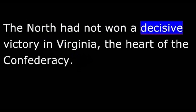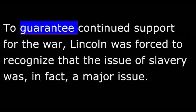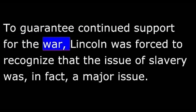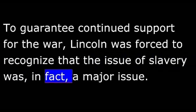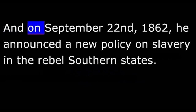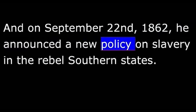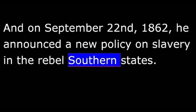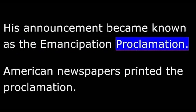Lincoln was able to follow this policy at first, but the war to save the Union was going badly. The North had not won a decisive victory in Virginia, the heart of the Confederacy. To guarantee continued support for the war, Lincoln was forced to recognize that the issue of slavery was, in fact, a major issue. And on September 22nd, 1862, he announced a new policy on slavery in the rebel southern states.